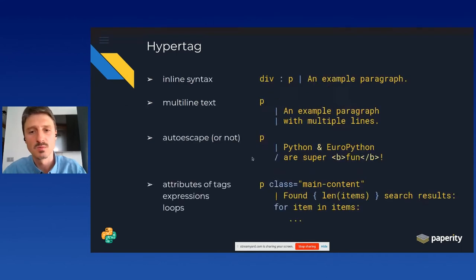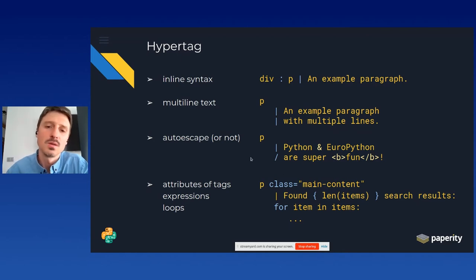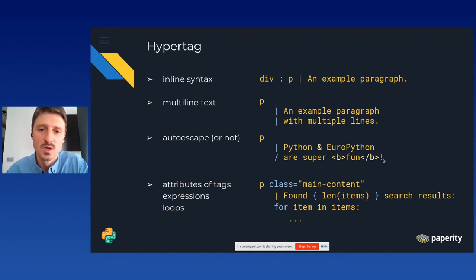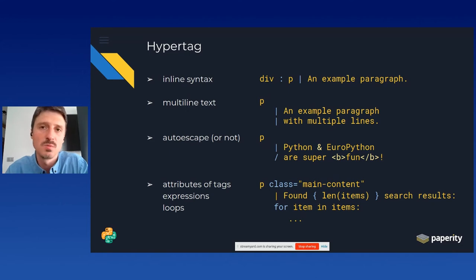One more thing from the previous slide: with the use of indentation and vertical bars marking text blocks, in many cases it's possible to maintain a visual separation between tags and text content — tags on the left and text on the right. When you look at the code you instantly see which part provides HTML structure and which part contains raw text to be displayed to the user.